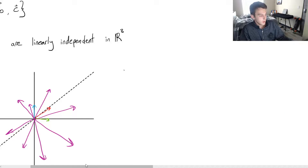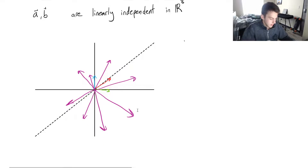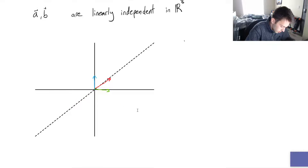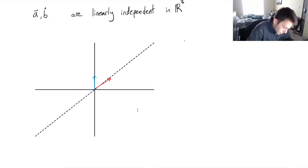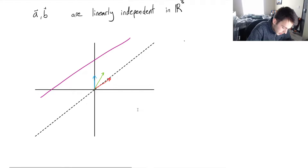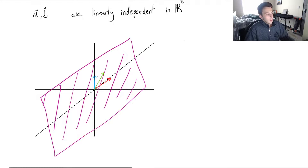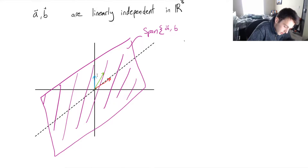Now if only a and b are linearly independent and c is not — if c is a linear combination of a and b — we have two linearly independent vectors, which we showed can span an entire plane. Visualizing this in 3D, you could only reach a single sheet-of-paper-like plane in R3. That would be your span of a, b, and c, and it would equal the span of just a and b.